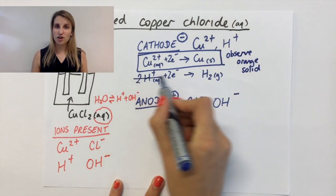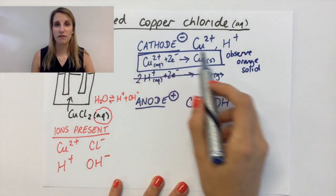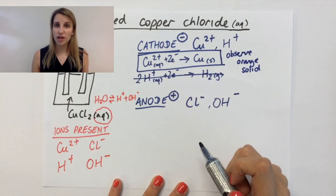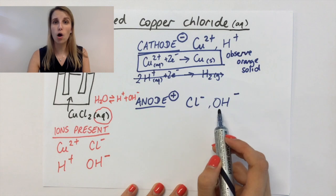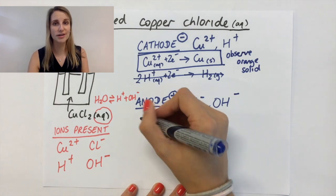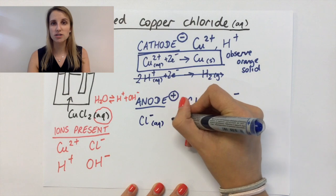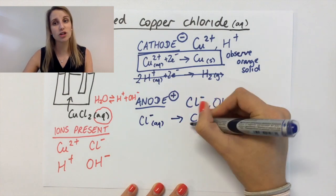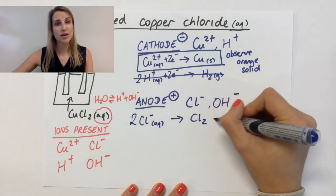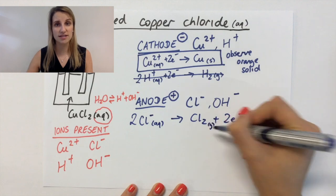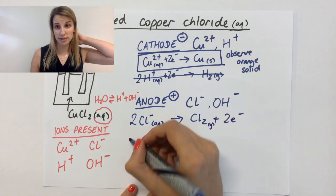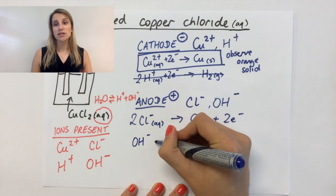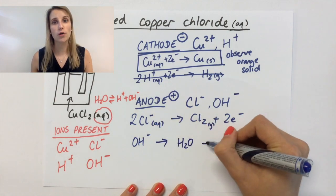Let's look at the anode to work out what happens in that scenario. So let's write the equations of what could happen if both of those ions at the anode were oxidized, because oxidation always happens at the anode. So if the Cl- was oxidized to form Cl2, it would also kick out two electrons in this equation here.